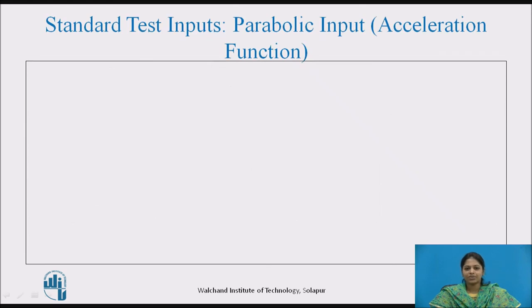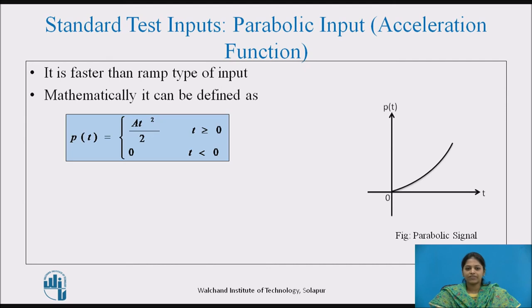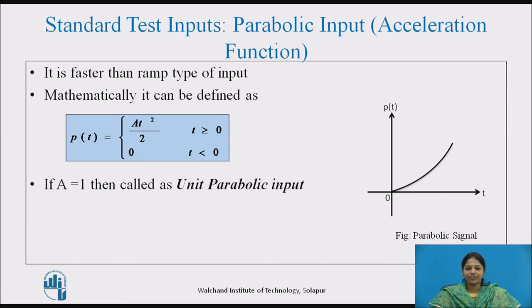The next standard test input is the parabolic input, which is the acceleration function. This input is one degree faster than the ramp type of input, as shown in the figure. Mathematically, it is defined as R(t) = At²/2 for t ≥ 0, and R(t) = 0 for t < 0. If A = 1, it is called the unit parabolic input. The Laplace transform of this input is A/s³.